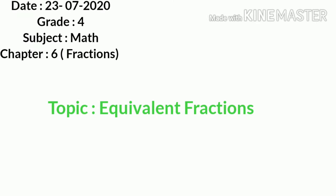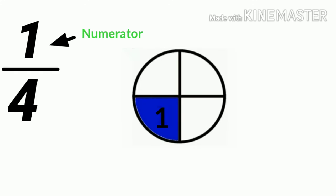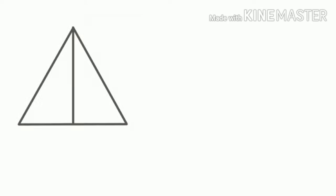Hello students, today we will start Chapter 6: Fractions, and the topic you are going to learn in this video is equivalent fractions. But first, let's revise about fractions. A fraction is a part of a whole. It represents one or more equal parts of a whole object. While writing a fraction, we put one number above another with a line between them. The top number, or numerator, tells us how many parts we are talking about. The bottom number, or denominator, tells us how many parts there are altogether.